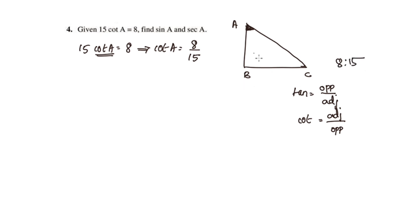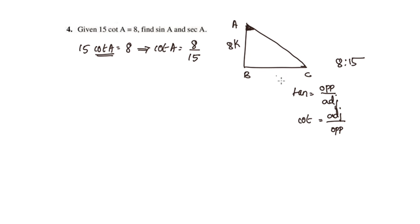The ratio is AB and BC. So AB is 8 and BC is 15. Tan equals opposite by adjacent. Adjacent side is AB, which is 8K, and opposite side BC is 15K.